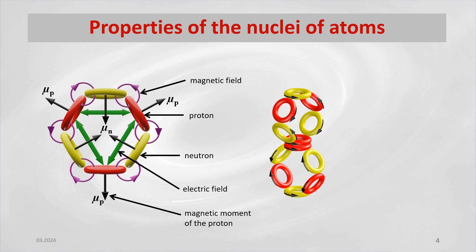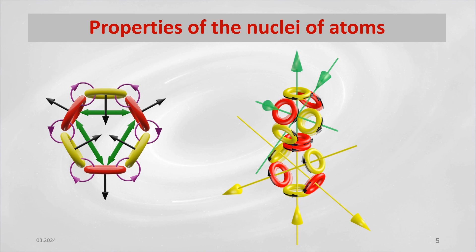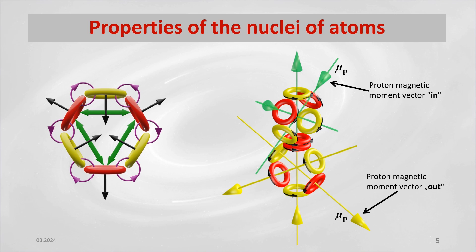The planes of these globules are perpendicular to each other. One of the most important elements of the structure of the nucleus model is the distribution and orientation of the magnetic moments of the proton rings in the adjacent globules. In one globule, the magnetic moment vectors of the protons point inwards, and in the other globule, the vectors of magnetic moments of the protons point outwards from the globule.